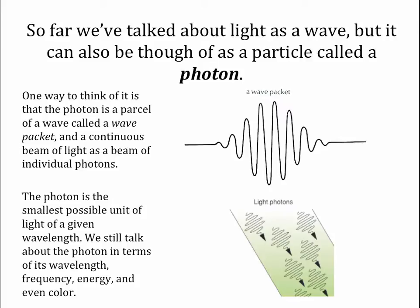Because a photon can be thought of as a wave packet, we can still talk about the photon in terms of its wavelength, its frequency, its energy, even its color. The photon nature of light and the wave nature of light are interchangeable. For this discussion on how light interacts with atoms, it's often helpful to think of light as a photon.